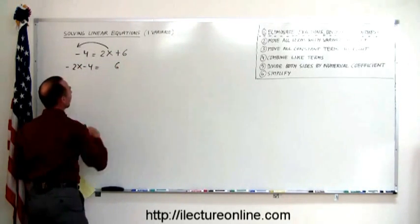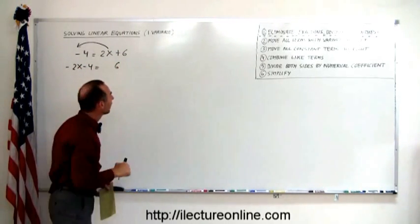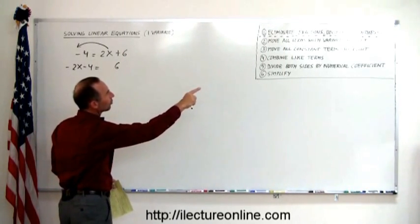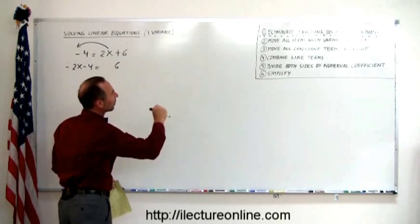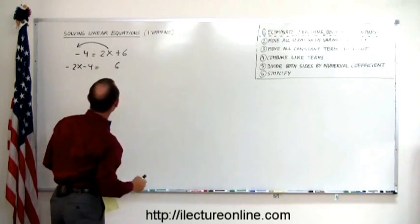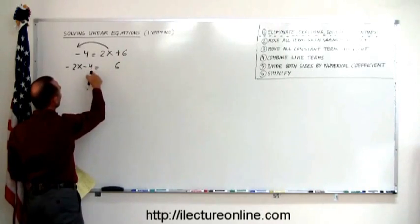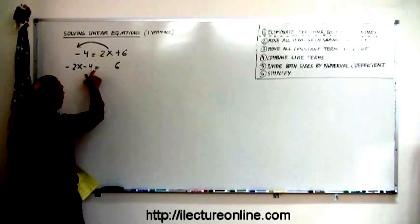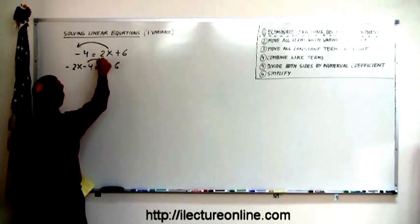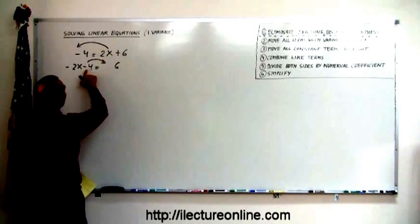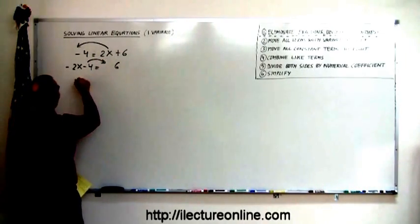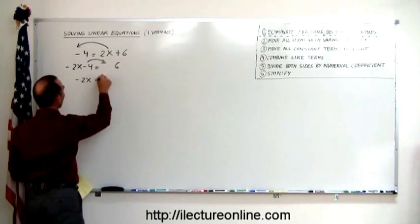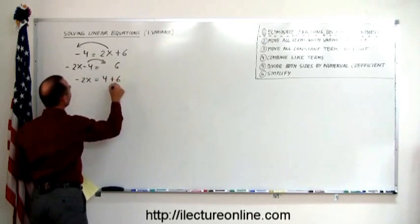This becomes: minus 2x minus 4 equals 6. Notice the 2x is now gone from the right side. The next step is to move all the constant terms to the right side. I have a negative 4 — that's a constant, no variable — and I move that to the other side. When I do that, the sign changes again: minus 2x equals positive 4 plus 6.